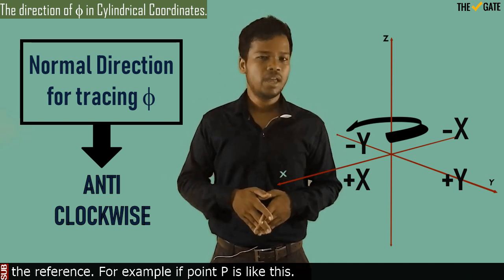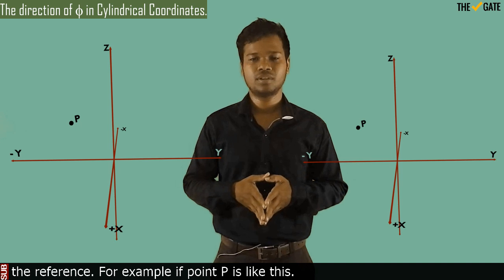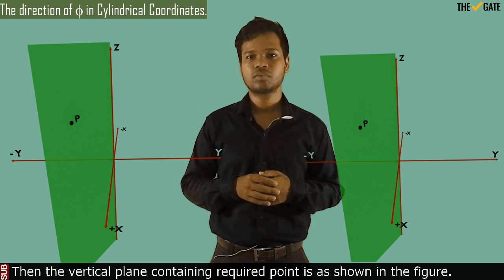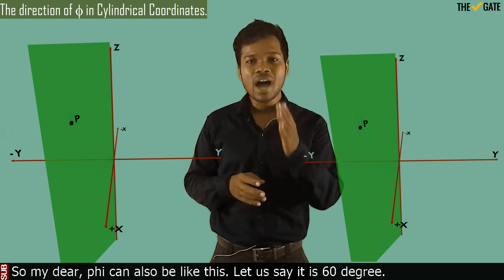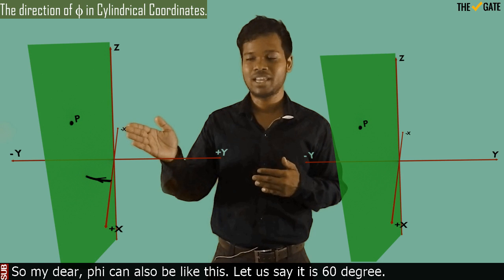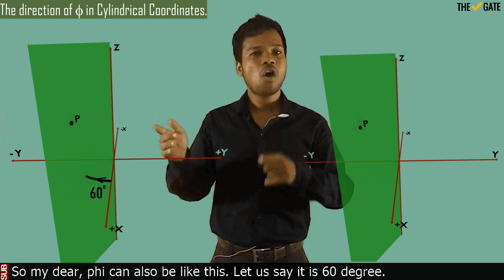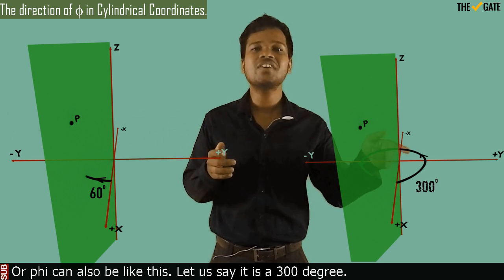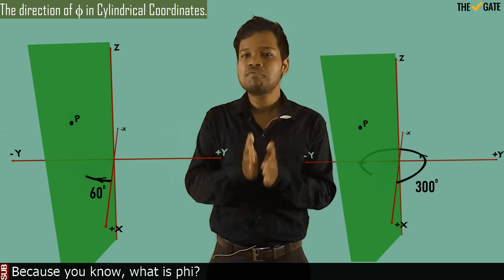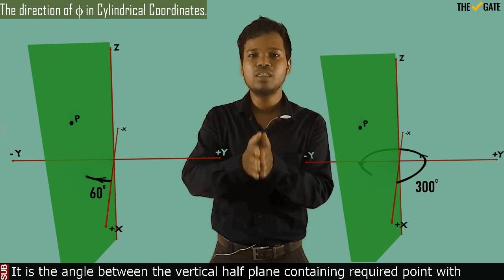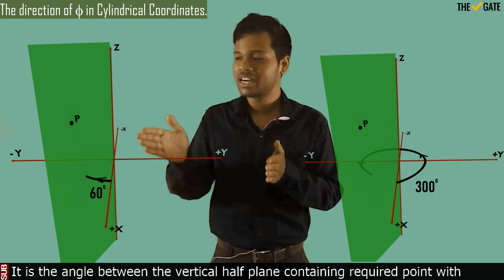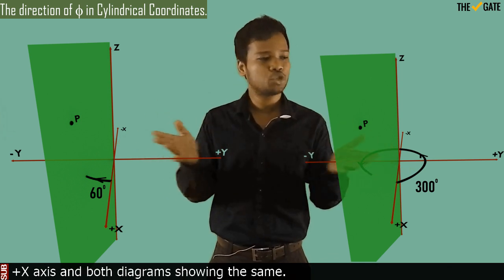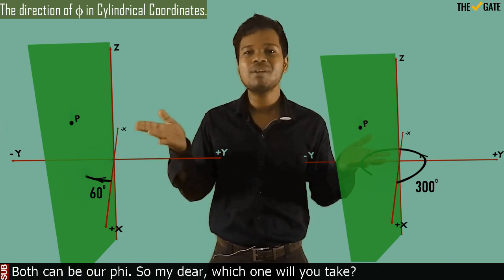For example, if a point phi is like this, then the vertical plane containing this required point is as shown in the figure. Phi can also be like this — let us say it is 60 degrees — or phi can also be like this — let us say it is 300 degrees. Because phi is the angle between the vertical half-plane containing the required point with the positive x-axis, and both diagrams show the same.